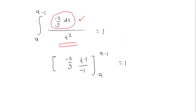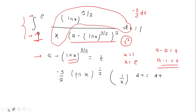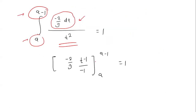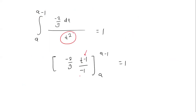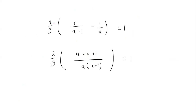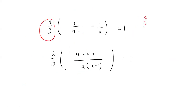Now let's see how the limits change. The x limits are from 1 to e. If you put x = 1, then ln(1) = 0, so t = a minus 0 = a. If you put x = e, then ln(e) = 1, so t = a minus 1. So in terms of t, the limits are from a to a minus 1. The integral of (1/t^2) is t^(-1) divided by minus 1, giving (2/3) outside — the two minus signs cancel — and we evaluate from a to a minus 1.